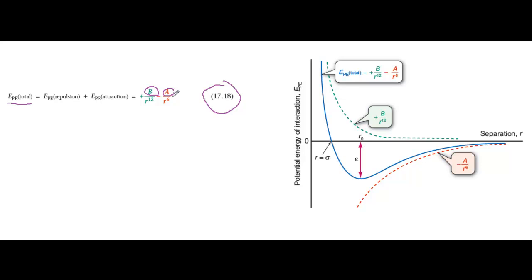Notice that the potential energy of attraction is inversely proportional to R to the sixth, which means its magnitude decreases very rapidly as the molecules are separated further apart. The energy of repulsion is inversely proportional to R to the twelfth, which means that its magnitude decreases even more rapidly as the molecules get further apart.